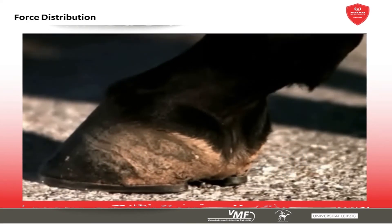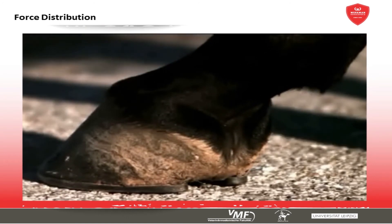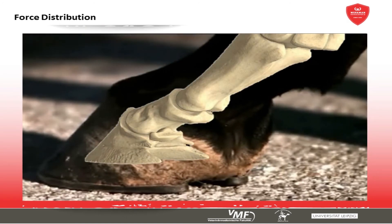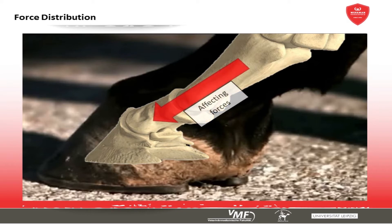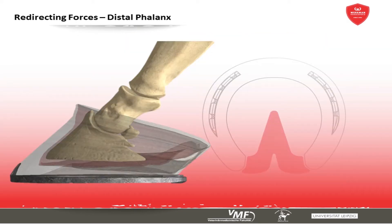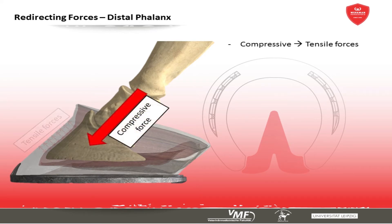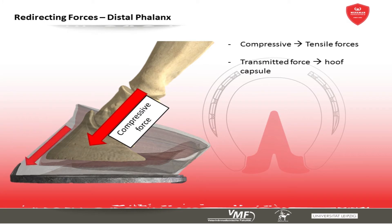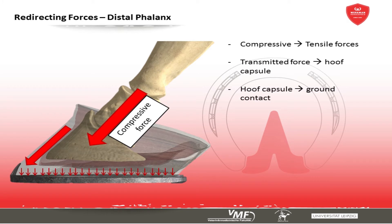While the limb is loaded, the pressure affecting the distal interphalangeal joint is split between the distal phalanx and the navicular bone. The distal phalanx will now convert the pressure forces into tensile forces via its suspensory apparatus and transmit them toward the hoof walls. Thereby, all regions of the hoof which are in contact with the ground become crucial in the weight-bearing process.